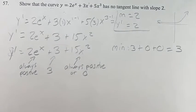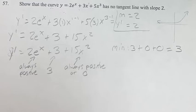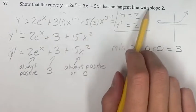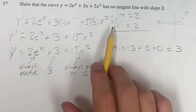So the minimum value of this derivative is 3. That means it never equals 2 - it's always 3 or greater. So that's how you show that this curve has no tangent line with slope equal to 2, because the derivative can never equal 2.